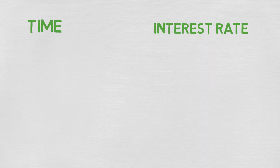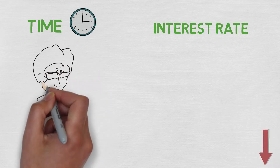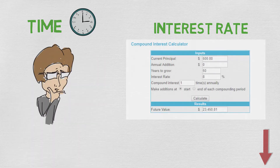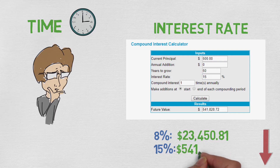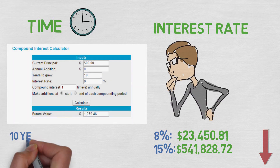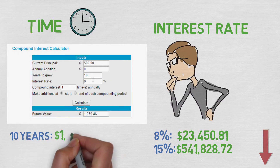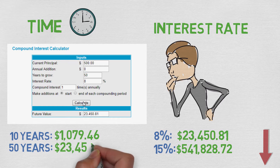The time and the annual interest rate have a huge impact on your profits. You can check the website in the description for a compound interest calculator to test how it affects your profits. For example, if you used a 15% annual interest rate instead of 8%, the 500 dollars would be worth over half a million instead of 23,000 dollars. If you invest for 10 years your profits would be a little over 1,000 dollars, but if you invest for 50 years they would be almost 23,500 dollars.